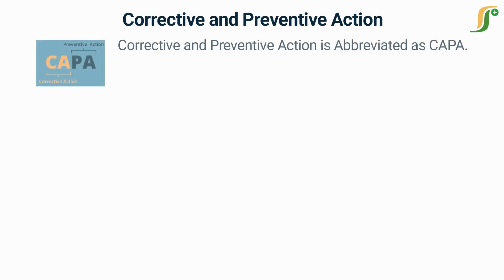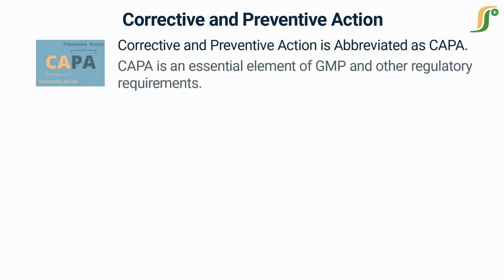Corrective and preventive action is an important process in the pharmaceutical industry that involves investigating the root cause of deviations, errors, and non-conformances and implementing corrective and preventive measures to address them. CAPA is a critical aspect of quality management in the pharmaceutical industry and it is an essential element of good manufacturing practices and other regulatory requirements.